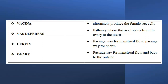Additional parts: Vagina, Cervix, Ovary. Functions: alternately produce the female sex cells; pathway where the ova travels from the ovary to the uterus; passageway for menstrual flow and passageway for sperm; passageway for menstrual flow and baby to the outside.